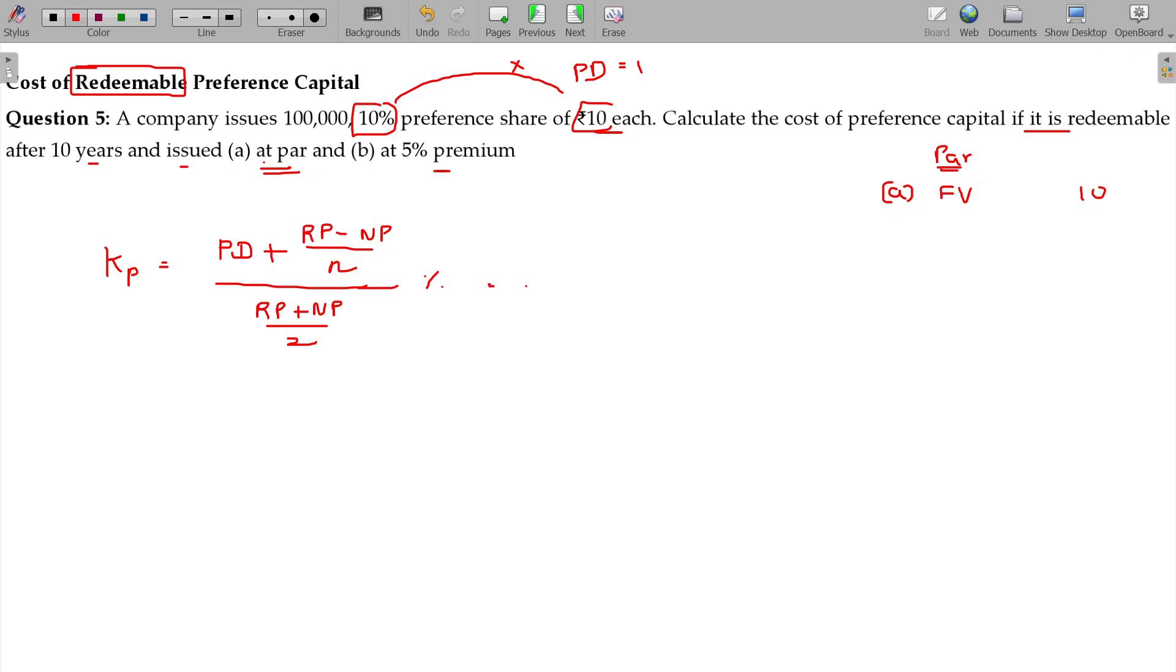So redeemable price is 10, net proceeds is also 10, issued at par. We assume it is redeemed at par, divided by 2, and preference dividend being 1. Redeemable price is 10, net proceeds also 10, divided by number of years being 10.